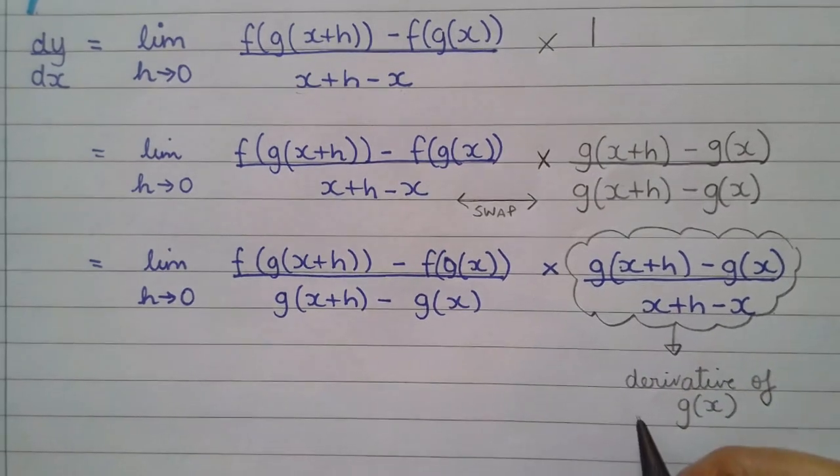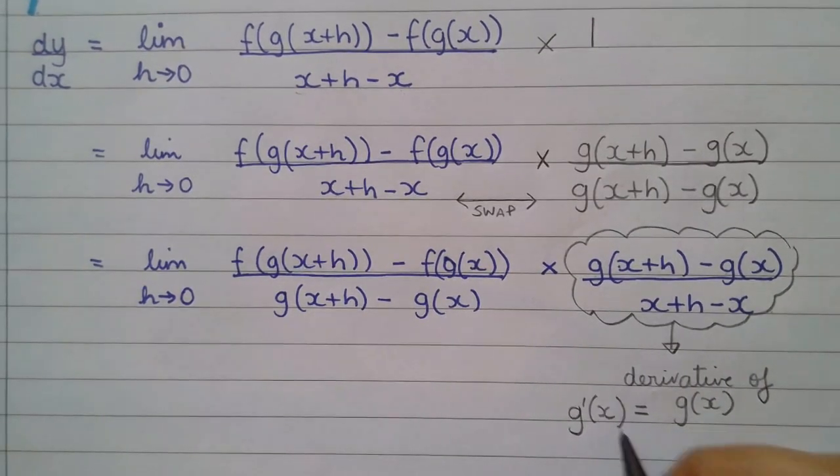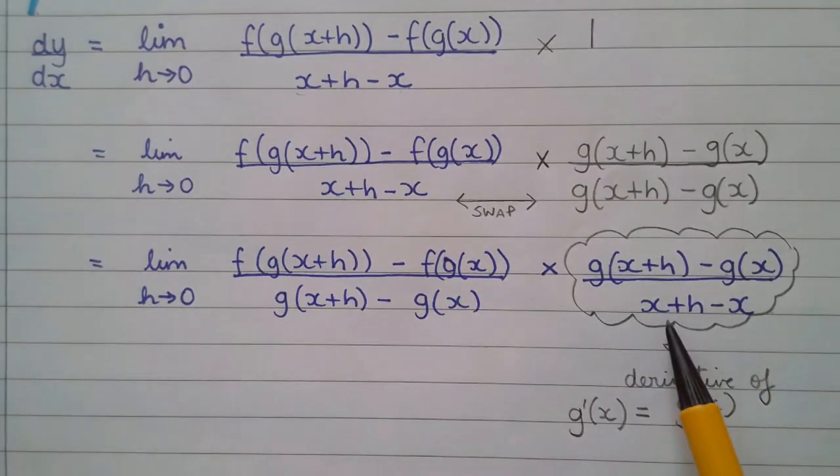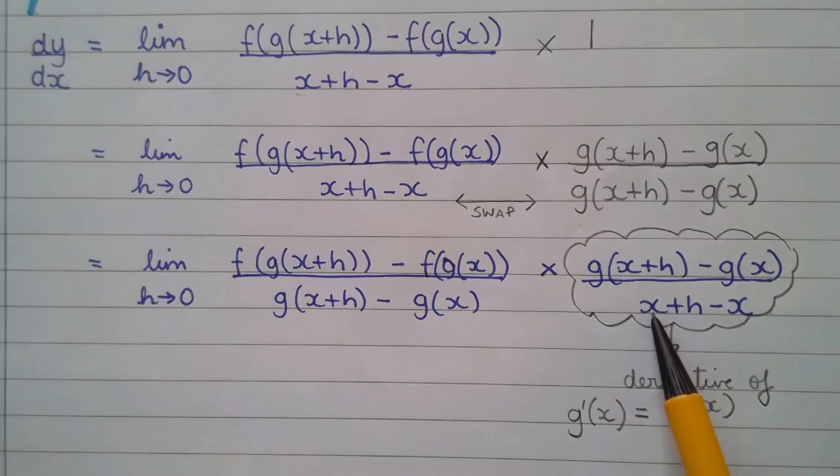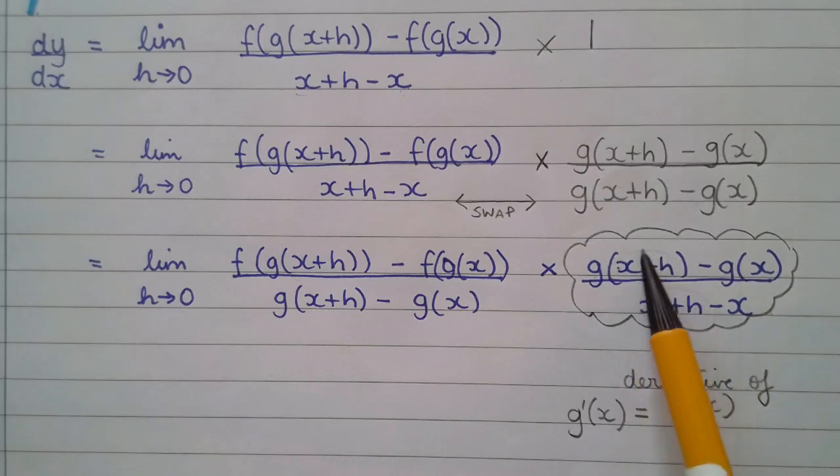And now we're going to have to look at this bit. Again, you'll be able to see a very similar thing. Look at the relationship between the numerator and the denominator here. There's an input of x, and there's an output. So, x plus h is used as an input here, and it's been made to go in a function of g of x. And this x has gone into the function g again.